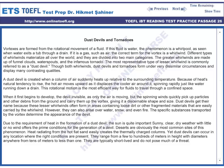A dust devil is created when a column of air suddenly heats up relative to the surrounding temperature. Because of heat's natural tendency to rise, the hot air moves upward as it displaces the cooler air around it, spinning rapidly just like water running down a drain. This rotational movement is the most efficient way for fluids to travel throughout a confined space. When it first begins to develop, the devil is invisible, as only the air is moving. But the spinning winds quickly pick up particles and other debris from the ground and carry them up the vortex, giving it a discernible shape and size.